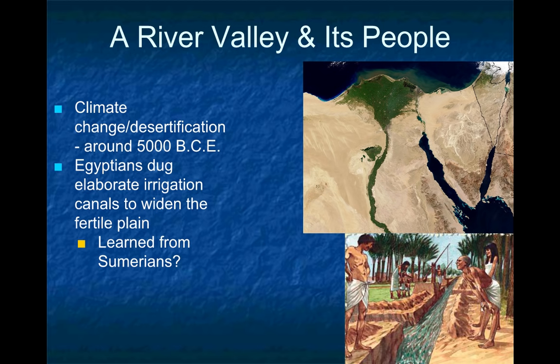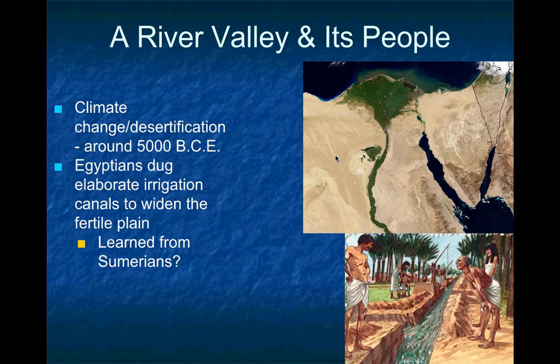Around 5,000 BCE, there was also major climate change in this region. The Sahara Desert actually got bigger — there was declining rainfall across North Africa, which caused desertification. So the Egyptian civilization became centered around the Nile River Valley because they were surrounded by very barren land that wouldn't produce food. The Egyptians adapted to this climate change by digging irrigation canals, which helped spread floodwaters to a wider geographic area.